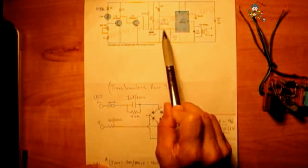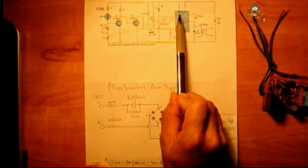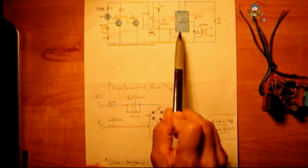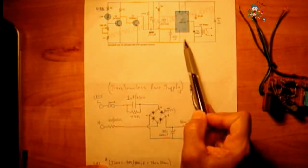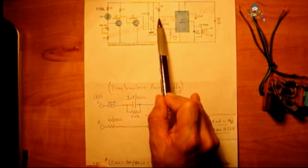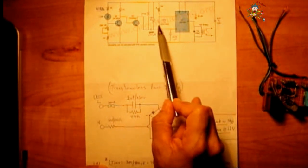The whole 555 circuit is set up in a one-shot configuration. Pins 4 and pin 8 tie together. Pin 6 and 7 is tied together. Pin 1 to ground. Pin 6 and 7 ties into the junction of a 2 megaohm potentiometer and a capacitor.